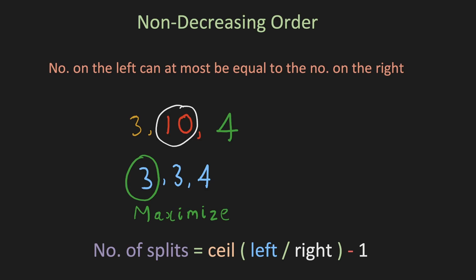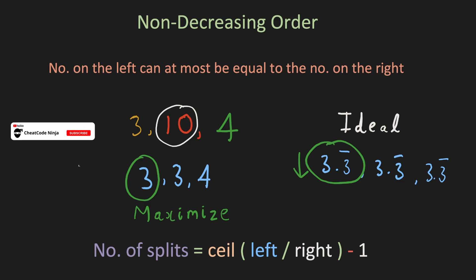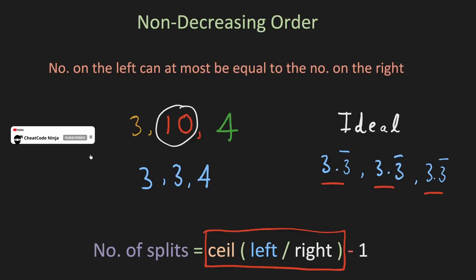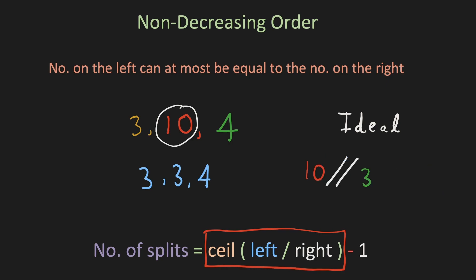The tricky part is figuring out the smallest element after splitting. Ideally we would want it to be the maximum possible number, which in this case will be 3.3 recurring. Since floating point numbers are not allowed, we floor it down to 3. We can also come up with a formula for this. The red part of this equation gives the number of parts of the split. And if we integer divide our left element by the number of parts, we get the optimal minimum value. Hence if we divide 10 into 3 parts, we get 3 as our minimum value, and this value becomes the maximum value for elements on the left.